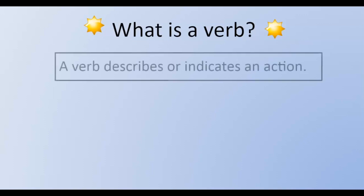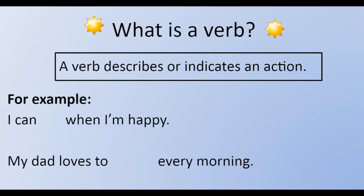We also need to remember what are verbs. A verb describes or indicates an action. For example, I can jump when I'm happy. My dad loves to walk every morning.